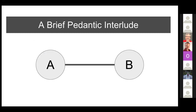A brief pedantic interlude: most networks are not relationships between individual things — they express relationships between classes of things. They are rules. 'Protein A binds Protein B' is typically a statement that in some circumstances proteins of type A have been observed to bind proteins of type B. It's the difference between saying 'by default cars have four wheels' and 'my broken car has three wheels.'